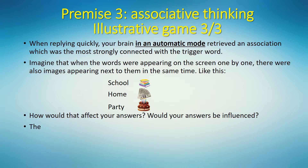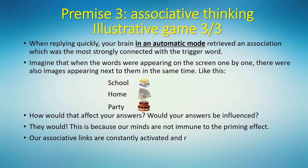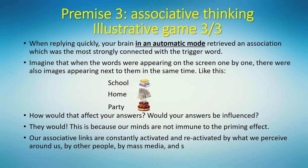It's hard to argue that they would not be influenced. This is because our minds are not immune to the priming effect. Our associative links are constantly activated and reactivated by what we perceive around us — by other people, by mass media, and so on. This is what priming is about.